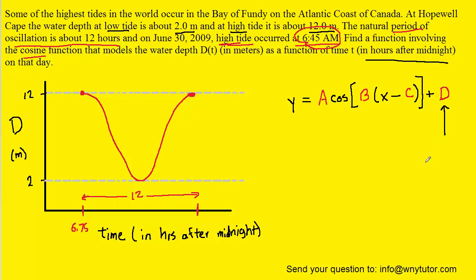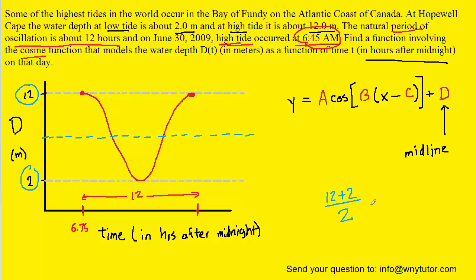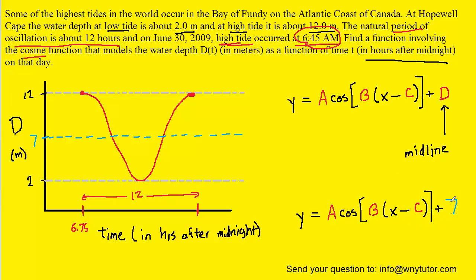D represents what I like to call the midline of this cosine graph. Returning to our graph, we know the highest tide was 12 and the lowest was 2. We want the middle of those two values — a horizontal line that cuts right through the middle of the cosine graph. To find that, we take the average: 12 plus 2 divided by 2 equals 14 divided by 2, which is 7. So the midline is 7, and that's the value of D.